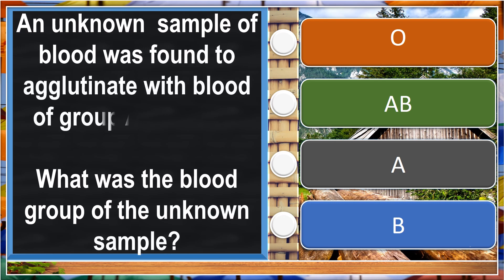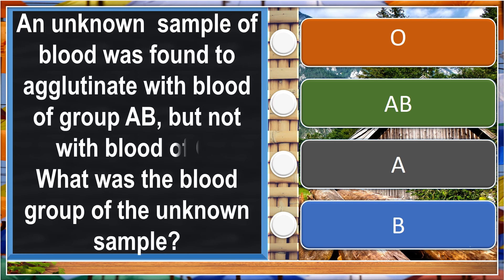An unknown sample of blood was found to agglutinate with blood of blood group AB but not with blood of O. What was the blood group of the unknown sample?